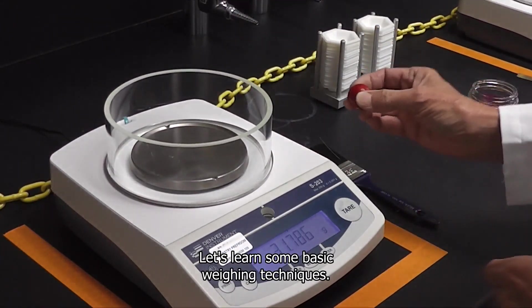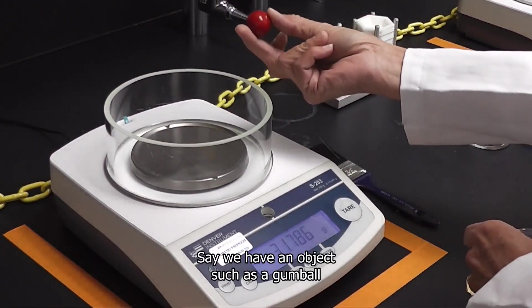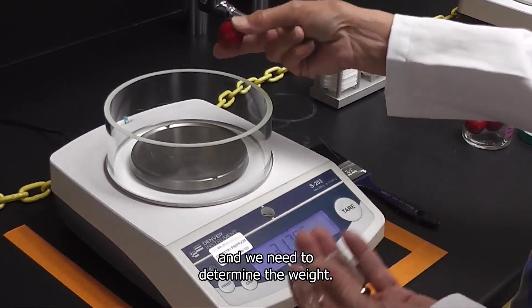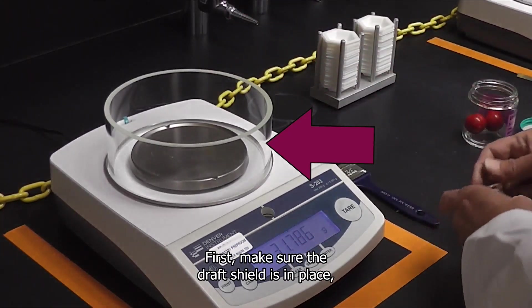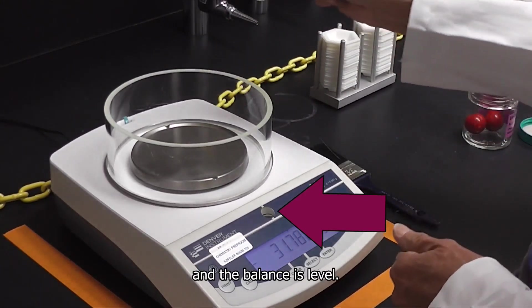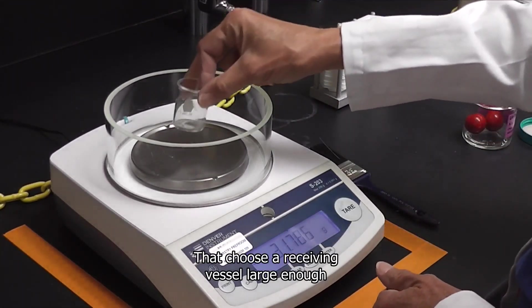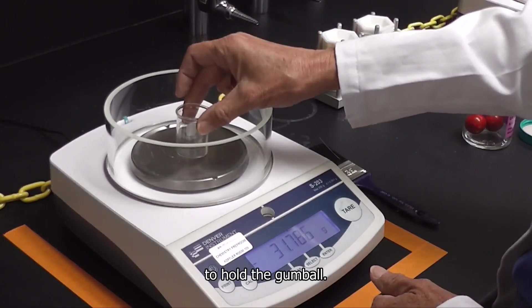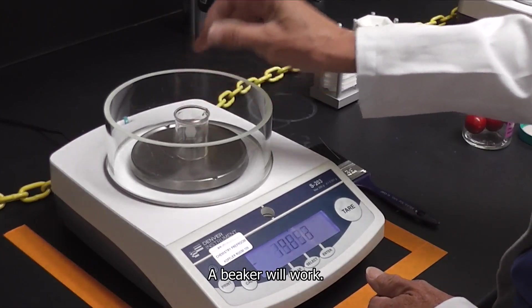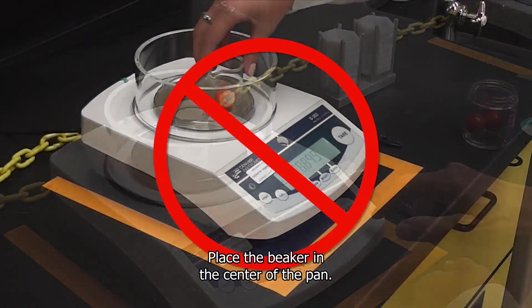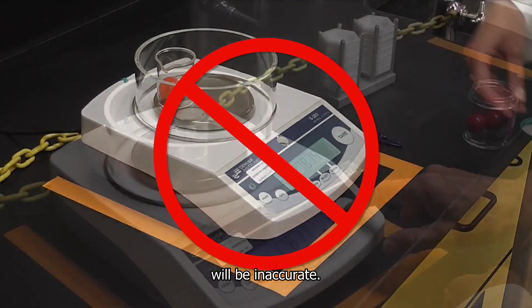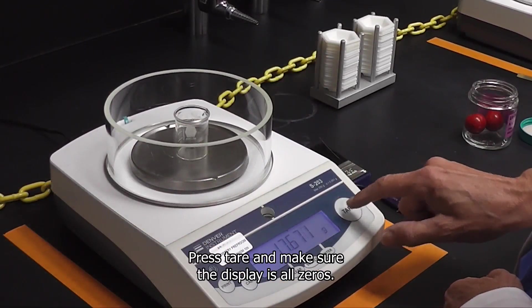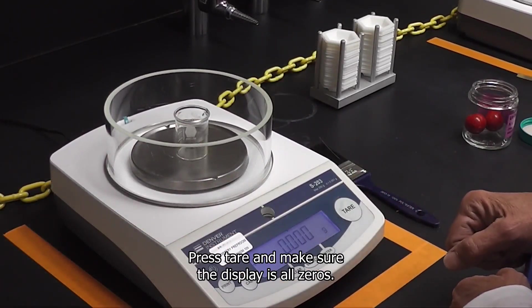Let's learn some basic weighing techniques. Say we have an object such as a gumball and we need to determine the weight. First, make sure the draft shield is in place and the balance is level. Then choose a receiving vessel large enough to hold the gumball. A beaker will work. Place the beaker in the center of the pan. Do not place it towards the edges or your weight will be inaccurate. Press tare and make sure the display is all zeros.